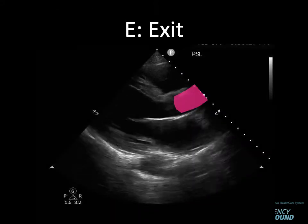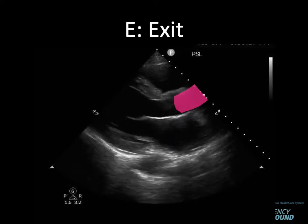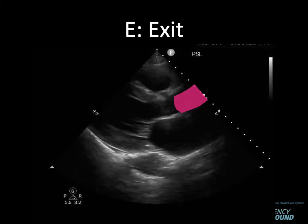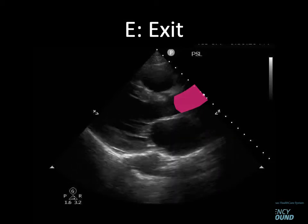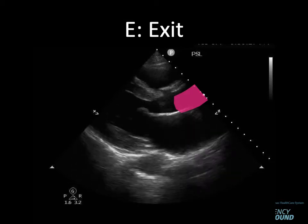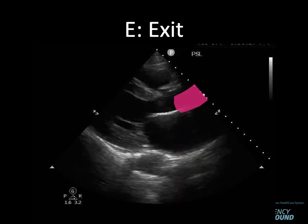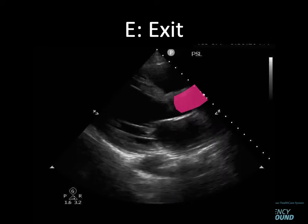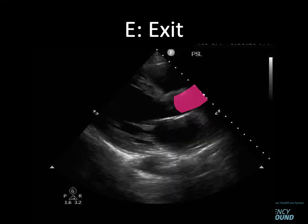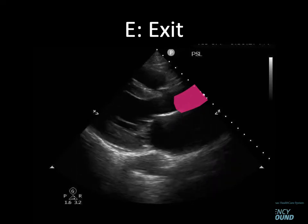Our next E is exit — looking at the aortic root and proximal aorta. A normal aortic root just above the sinuses of Valsalva is less than four centimeters. Greater than four and a half centimeters is considered aneurysmal. Enlarged aortic roots have a higher incidence of aortic dissection and can lead to different cardiac problems down the road, so this is definitely something to note and address.